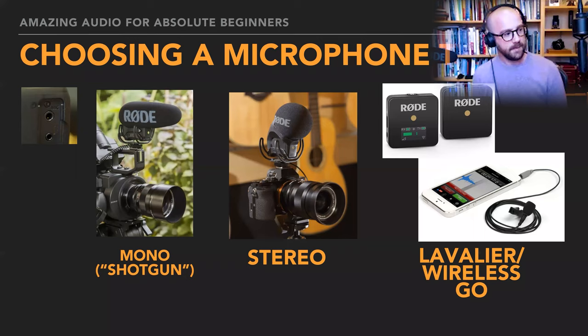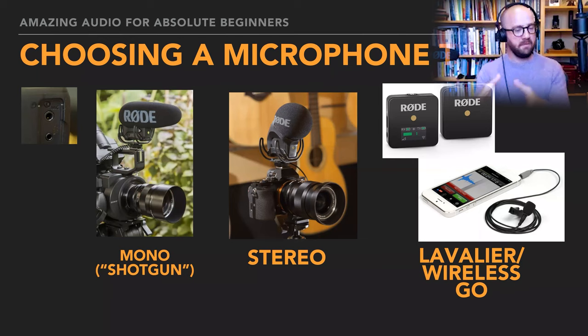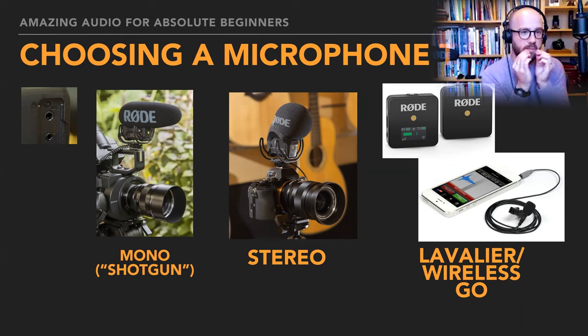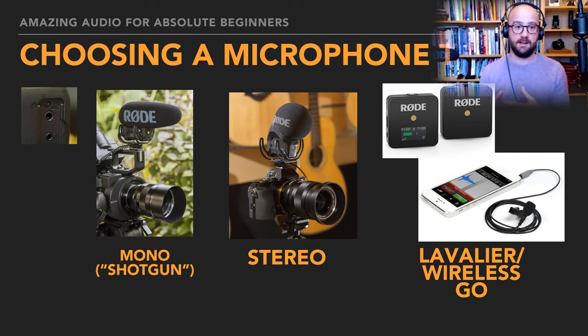A mono shotgun is the primary choice because when you point it at a person, you hear the person and less of the environment. You will still hear some of the environment — sound bounces around rooms — but it's vastly reduced. It allows you to focus on the speaking subject in a way that still sounds natural. Mono shotgun microphones are used to capture speech in about 99% of cases.